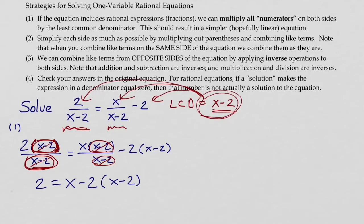So now this is just a linear equation. I can solve first multiplying negative two across the parentheses. We get two equals x minus two plus four, and now I have some like terms here that I can combine.